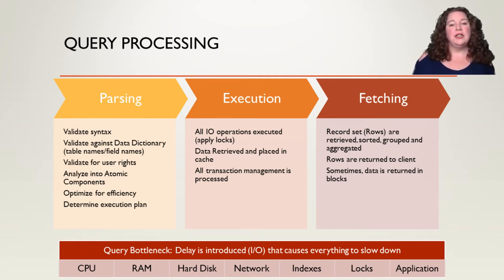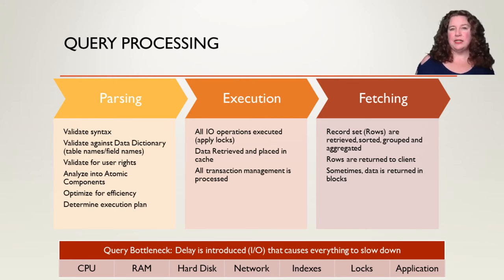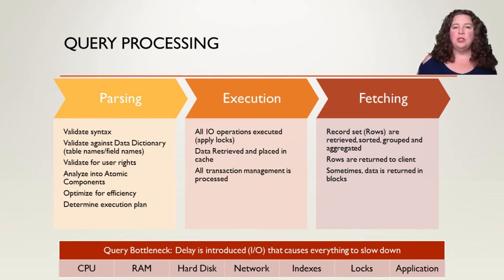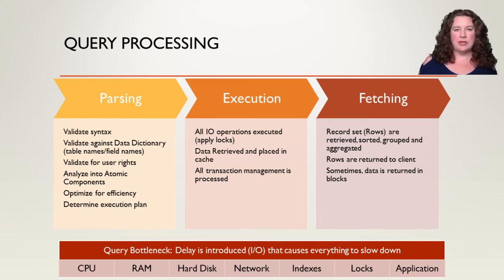The rows are returned to the client and data can be returned in blocks. Some DBMS's will return a hundred rows at a time so that a large dataset doesn't fill up the network. It'll return a hundred, then another hundred, until the full result is returned. This is done for efficiency.